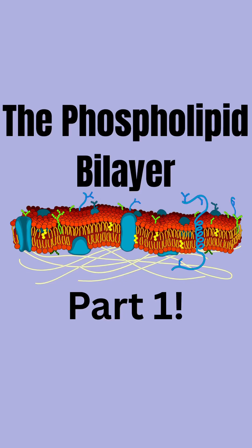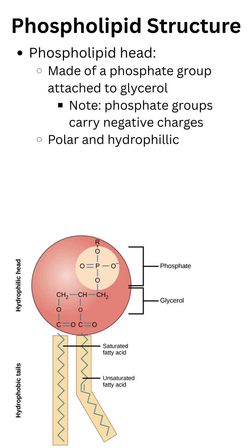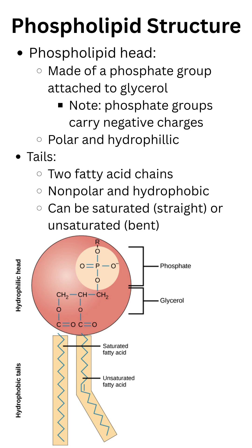Hey everyone! This is going to be part one of a multi-part series all about the phospholipid bilayer, which is the structure that lines our animal cells. Starting with our phospholipids, they belong to the lipid class of macromolecules. Each one is made up of a glycerol and phosphate head, which carries a negative charge — it is polar and hydrophilic.